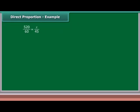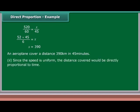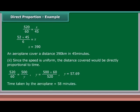For part one: 520 upon 60 is equal to x upon 45, so x equals 520 times 45 upon 60, which equals 390. The airplane covers a distance of 390 km in 45 minutes. For part two, since speed is uniform: 520 upon 60 is equal to 500 upon y, so y equals 500 times 60 upon 520, giving y equals 57.69, approximately 58 minutes.